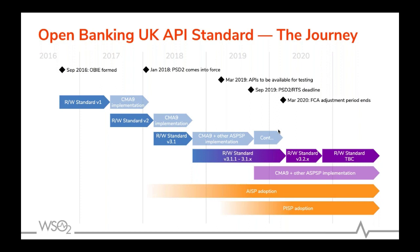The OBIE — the Open Banking Implementation Entity — was formed in September 2016, which is pretty much when I started my journey here as well. We were set up by the UK government in response to the Competition and Markets Authority. They did a markets investigation and decided that banks needed to open up APIs, mandating what is called the CMA9 — the nine largest retail banks in the UK — to fund the development of an open standard and to implement it.